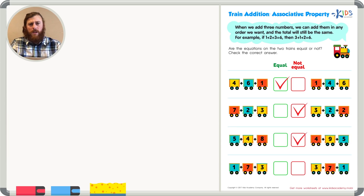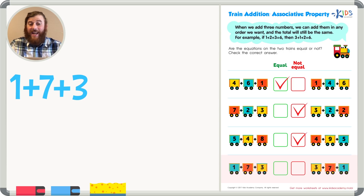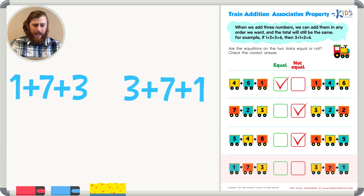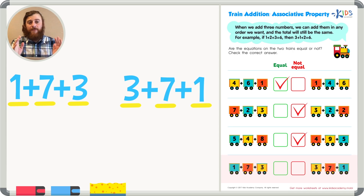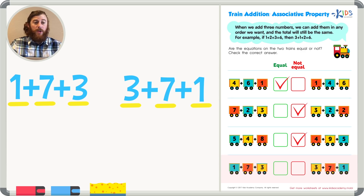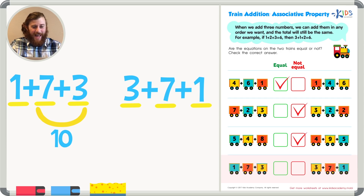Let's check out our last example. The first train has the addends 1 plus 7 plus 3, and our second train has the numbers 3 plus 7 plus 1. Let's review the numbers and see if they're the same. In the first train I have a 1, and in the second train I have a 1. In the first train I have a 7, and in the second train I have a 7. In the first train there is a 3, and in the last train there is a 3. So these numbers are exactly the same — they might not be in the same order, but the associative property tells you it doesn't matter what order you add them in. In my first train I'm going to add 7 plus 3, because I know 7 plus 3 makes a 10. I'll add the remaining 1, and 1 plus 10 gives me a sum of 11.